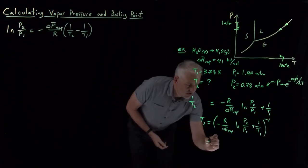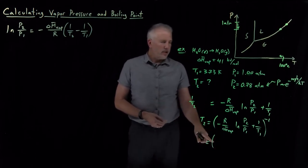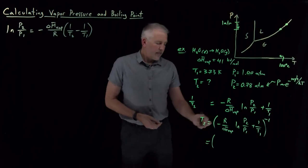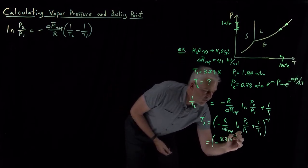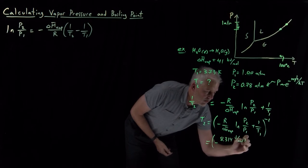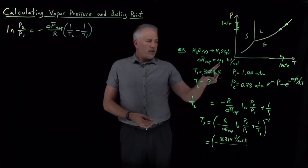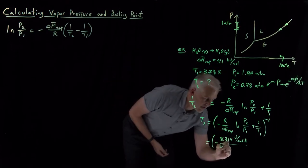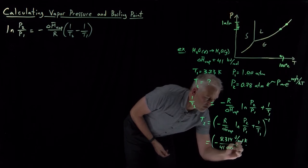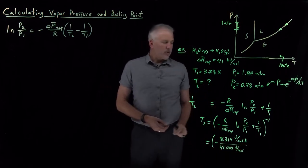So we can plug numbers in, doing that somewhat carefully to make sure we treat the units correctly. The gas constant, I'll use that in units of joules per mole Kelvin. I'll divide that by heat of vaporization, which I've given you as 41 kilojoules per mole. To cancel the joules here, I'll write it now as 41,000 joules per mole. That looks good. Joules per mole is going to cancel.